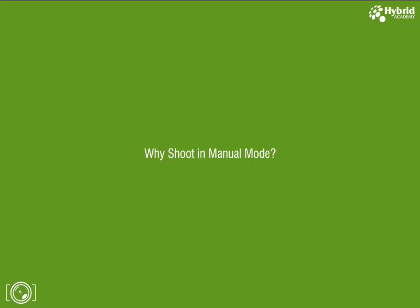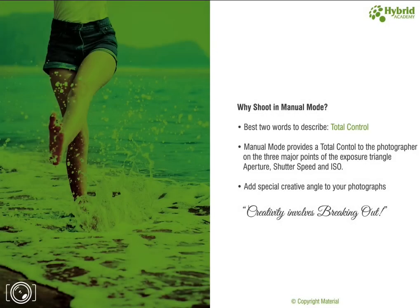Why shoot in manual mode? We can describe manual mode in just two words: total control. Manual mode gives you the independence to break out of dependency on fully auto mode or partial auto modes, and allows you to fully manipulate the photo output by controlling the three major points of the exposure triangle — aperture, shutter speed and ISO. Using this, you can give a lot of creative angle to your regular pictures.